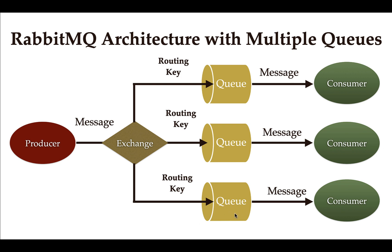Similarly, if the producer wants to send a message to Q1, it passes the message along with routing key 1, and the exchange routes that message to Q1. In this way, a binding or link is established between the exchange and a queue using the routing key. We will understand more about this when we implement RabbitMQ in a Spring Boot application. I hope you understood at a high level how the RabbitMQ architecture with multiple queues works. See you in the next lecture.